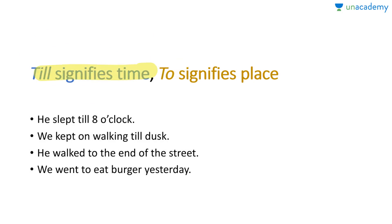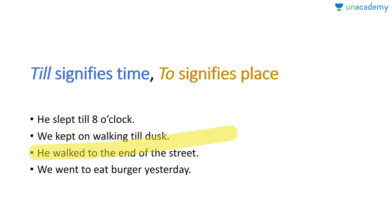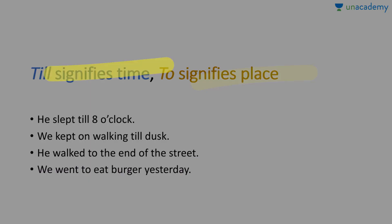'Till' and 'to' relate to different things. 'Till' signifies time, and 'to' signifies place. Examples: he slept till eight o'clock — we know the time. We kept on walking till dusk — dusk being the period after evening and before night. He walked to the end of the street — 'to' signifies a place. We went to eat burger yesterday — although I haven't said where exactly, 'to' still signifies a destination.